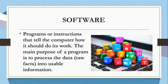Software, or programs, are instructions to tell the computer how it should do its work. The main purpose of a program is to process the data or the raw facts into usable information. For example, in a company, the invoicing program would give step-by-step instructions to the computer as to the number of items the company has sold, the price of each product, and add them so that they would know the total sales for the transaction.